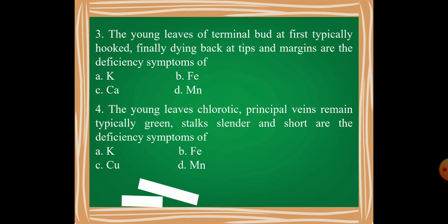Then moving on, fourth question: The young leaves chlorotic, principal veins remain typically green, and stalk slender and short are the deficiency symptoms of which of the following?